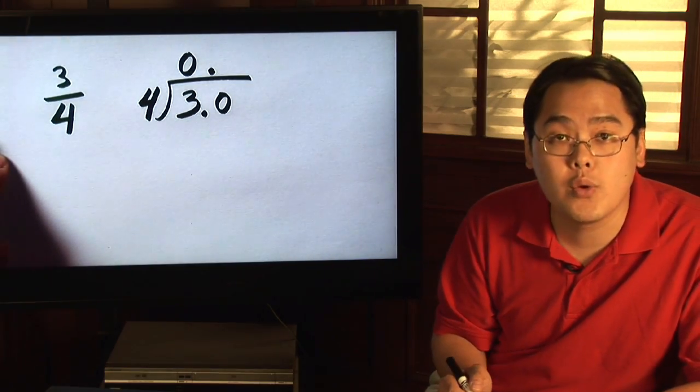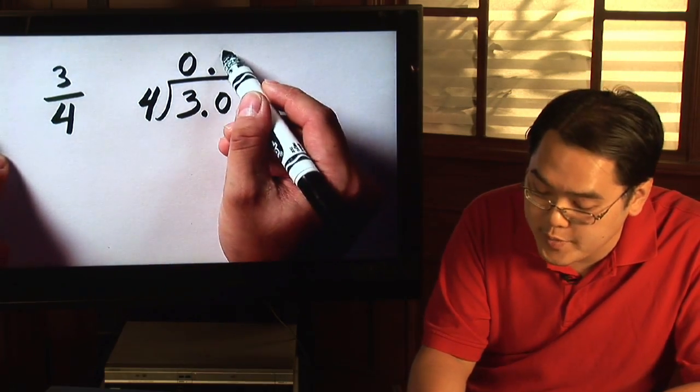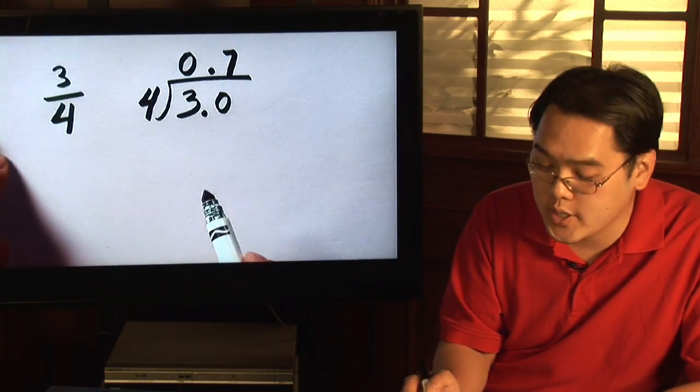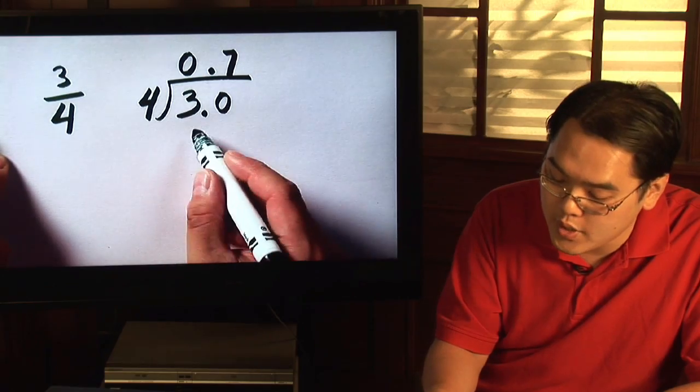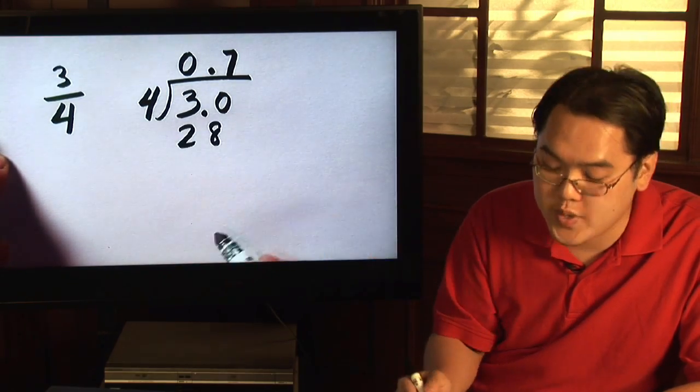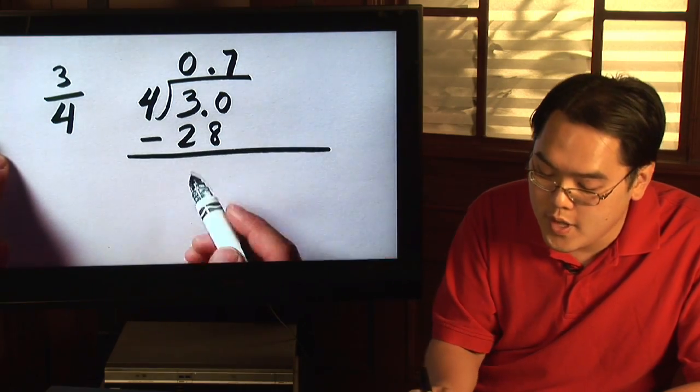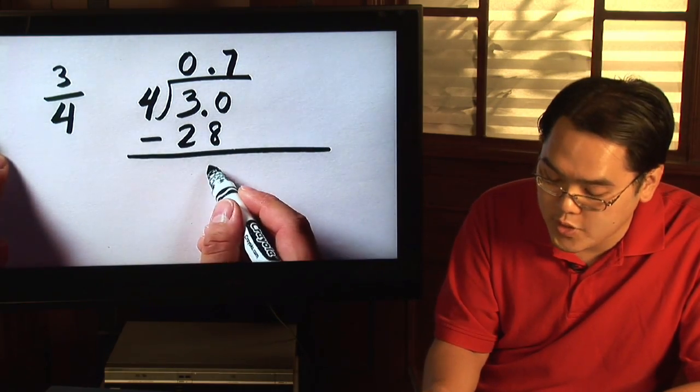Well you'll know that 4 goes into 30 is going to be 7 times. What you do after that is straight long division: 7 times 4 is 28. Since you already have the decimal there, you can just go ahead and subtract. 30 minus 28 is going to be 2.